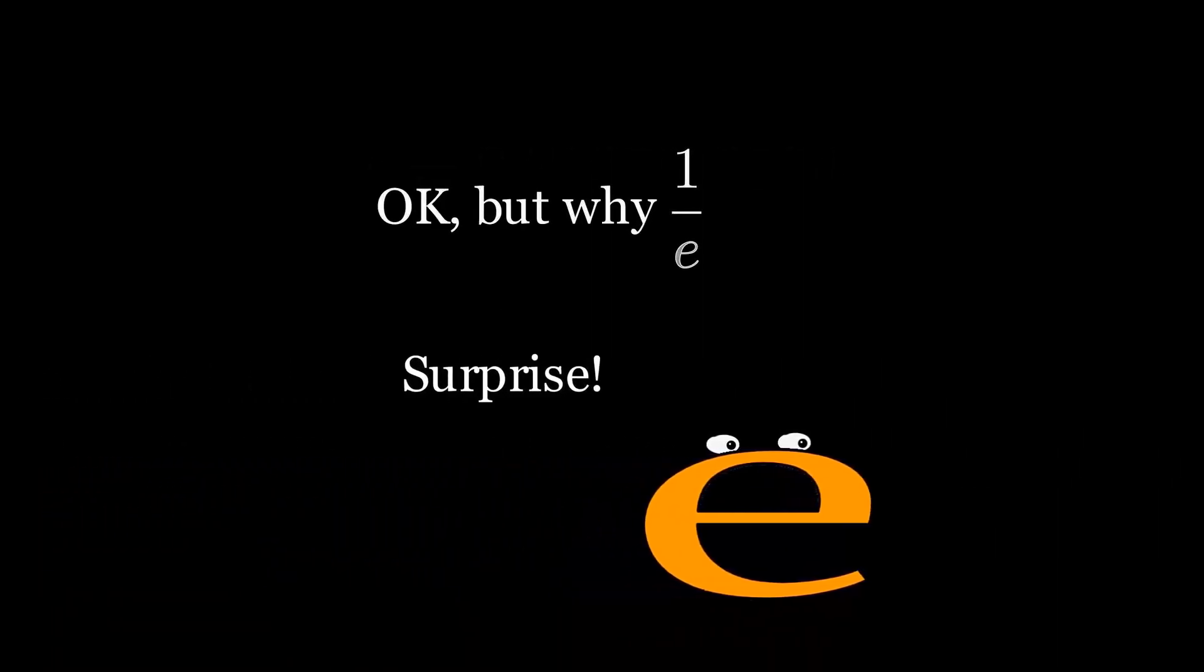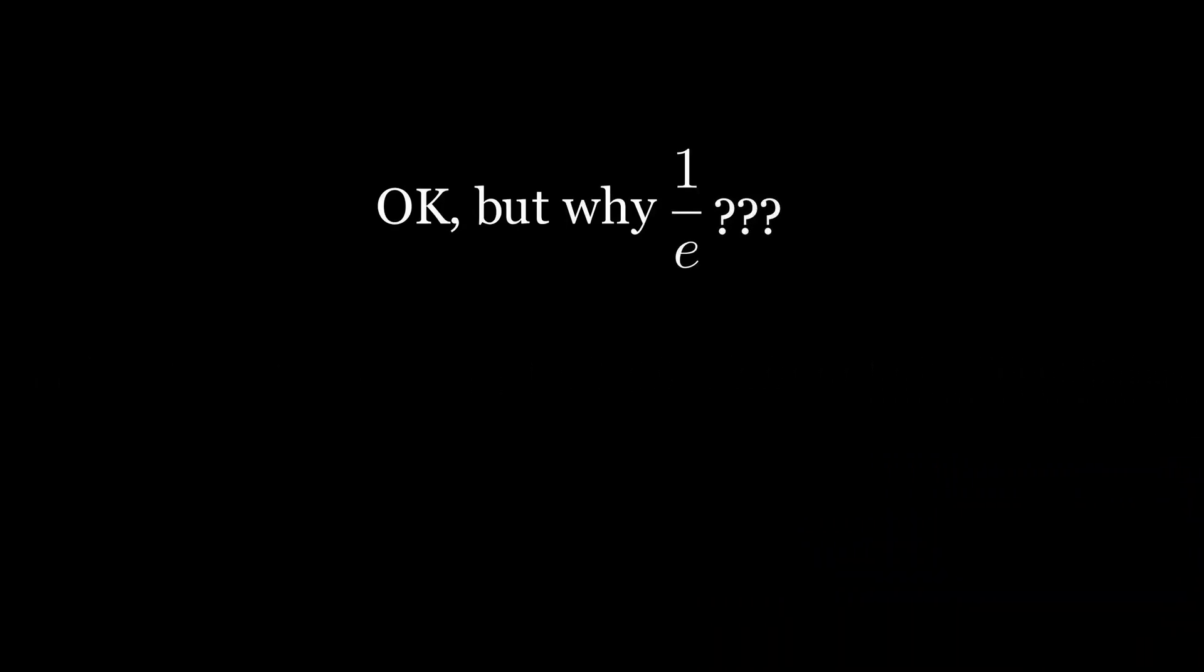Well it turns out 37% isn't a random number. In actuality, the ideal number is around 36.8% and this value is 1 divided by the constant E. But really, that just pushes the question out a step further. Why does E show up in this problem at all? E is frequently used for problems of continuous growth such as compound interest and it doesn't appear to be anything like that here.